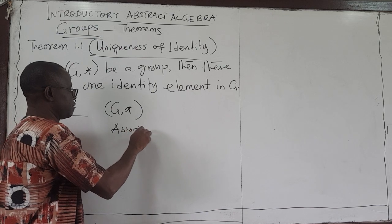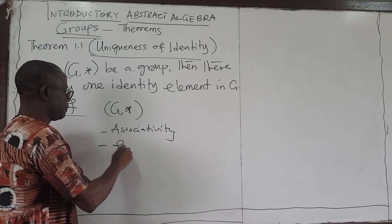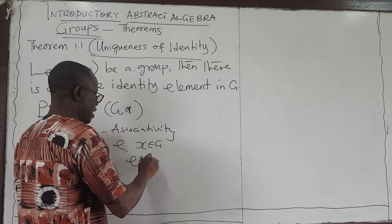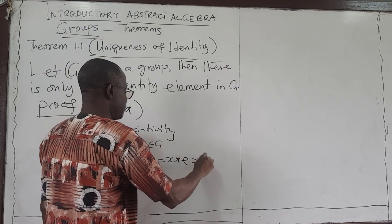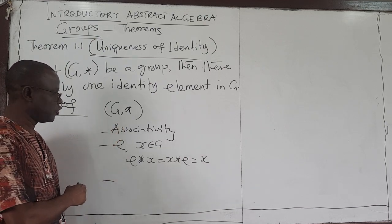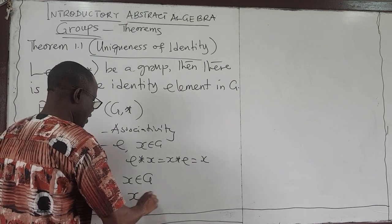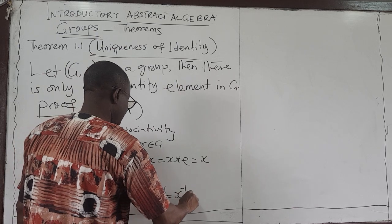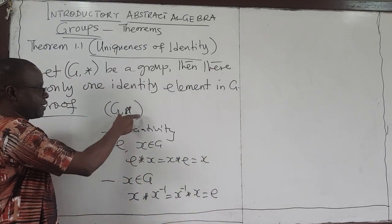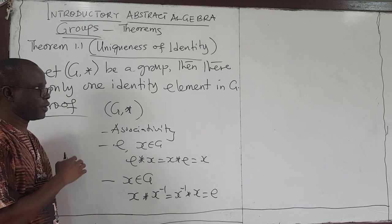You need associativity — this operation has to be associative. You need to have an identity element in G, so if I take any element X in G, E★X = X★E gives me back X. The third condition is that for any element X in G, X must have an inverse such that X★X⁻¹ gives the identity element. So once these three conditions are satisfied, this is a group. There are a couple of theorems important under groups that we want to look at and prove in the next couple of videos.